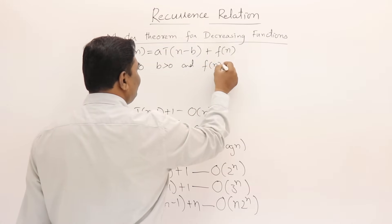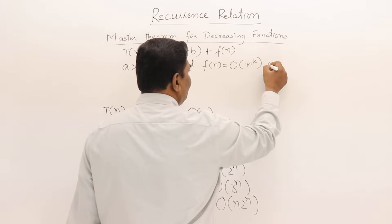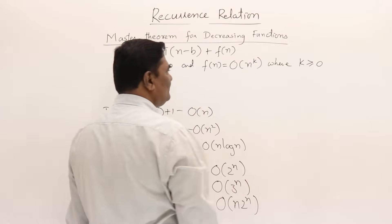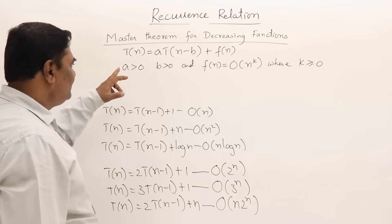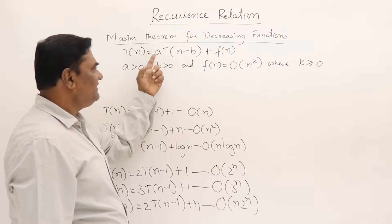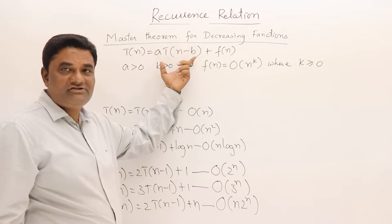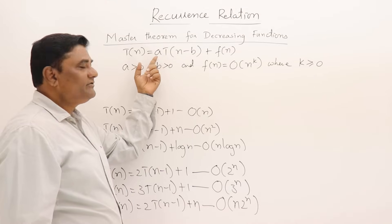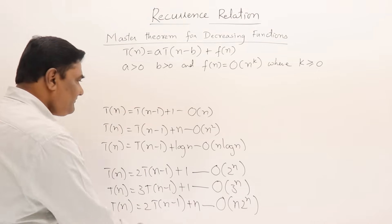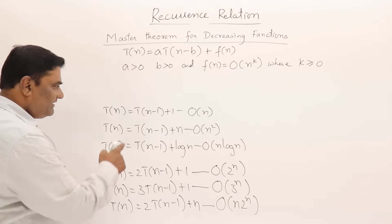In this general form we assume that a > 0 and b > 0, and f(n) is in the form O(n^k) where k ≥ 0. If b is 0 there is no subtraction, and if f(n) is 0 then everything is 0.